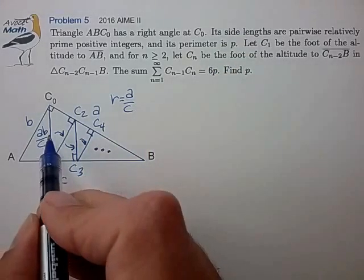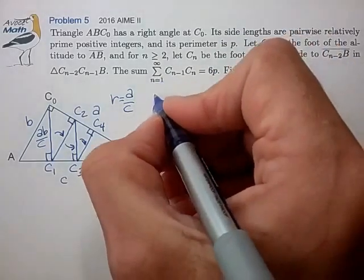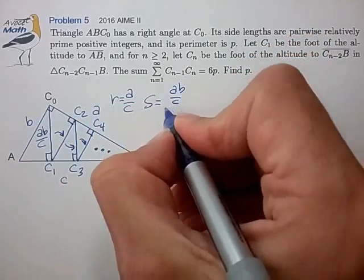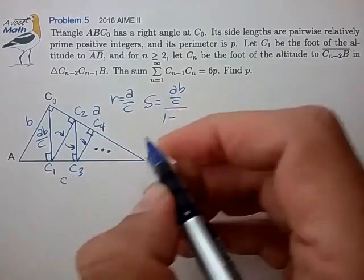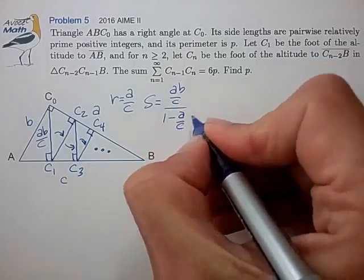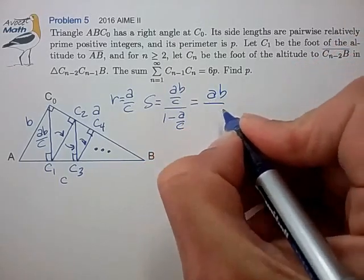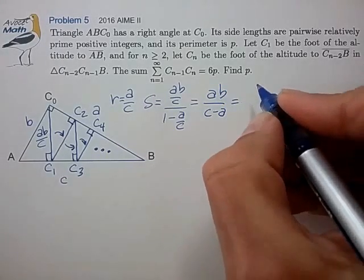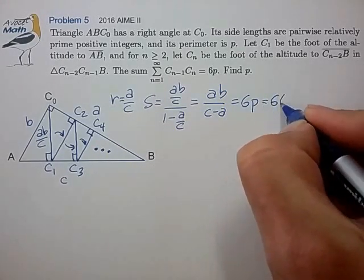So now we see a way to write out this infinite geometric series as the sum being the first segment AB over C divided by 1 minus the ratio A over C. Multiplying top and bottom by C, and we're told that this is equal to 6 times the perimeter. We could write that out.